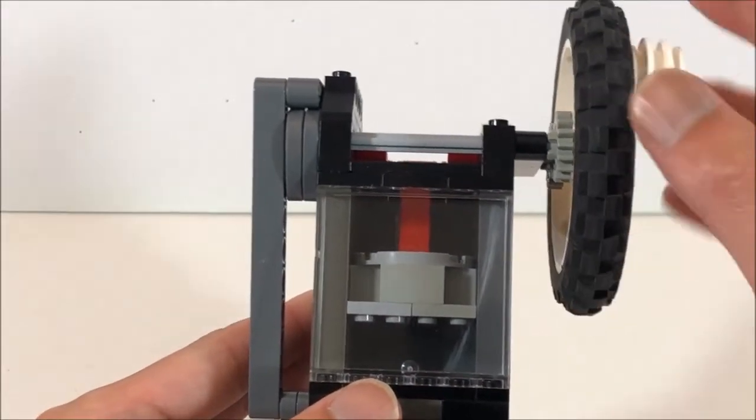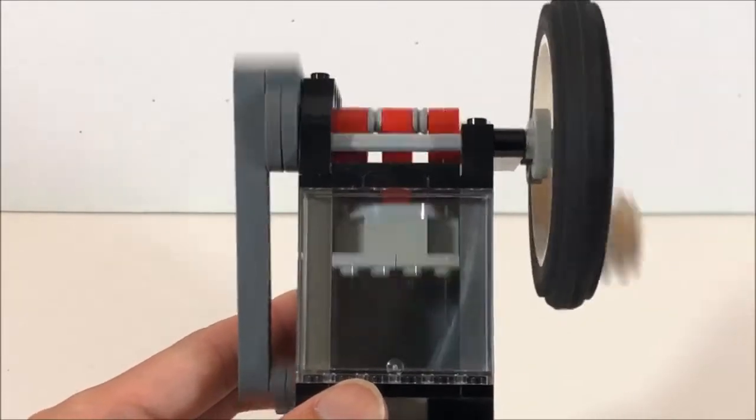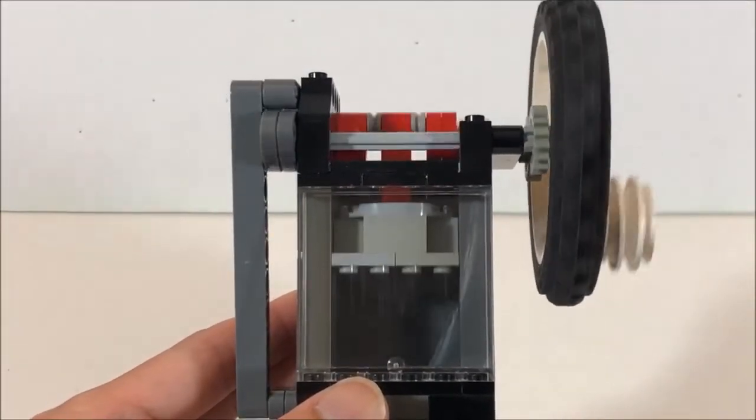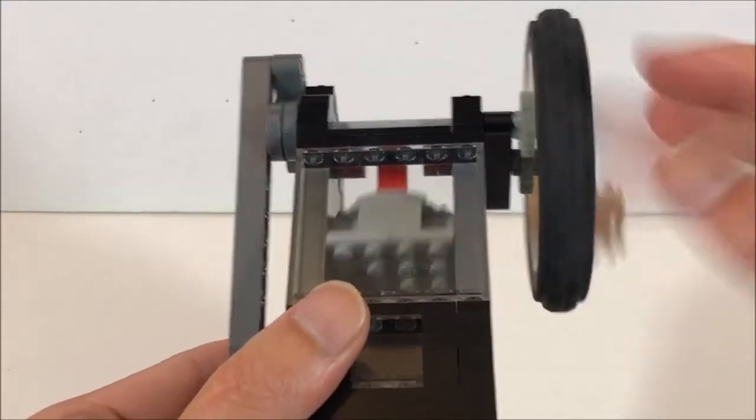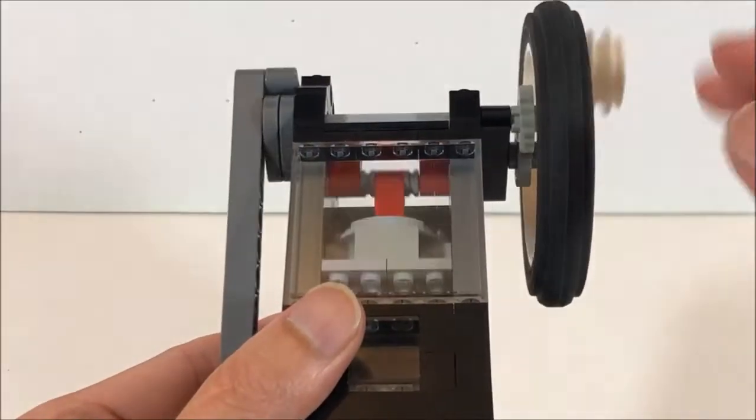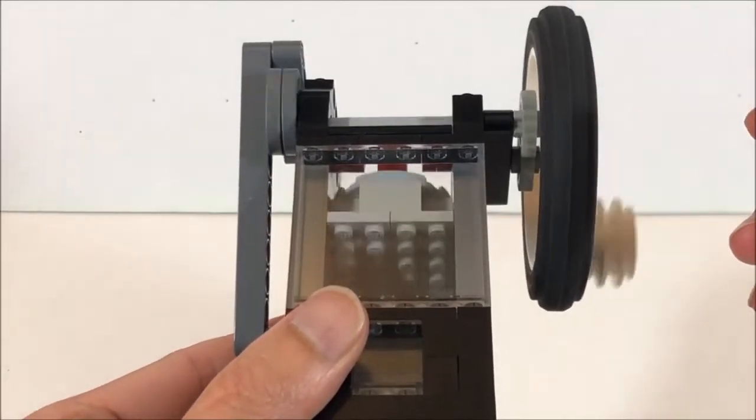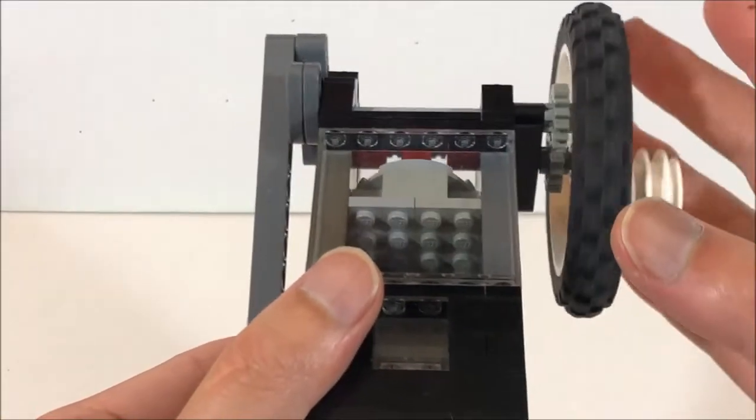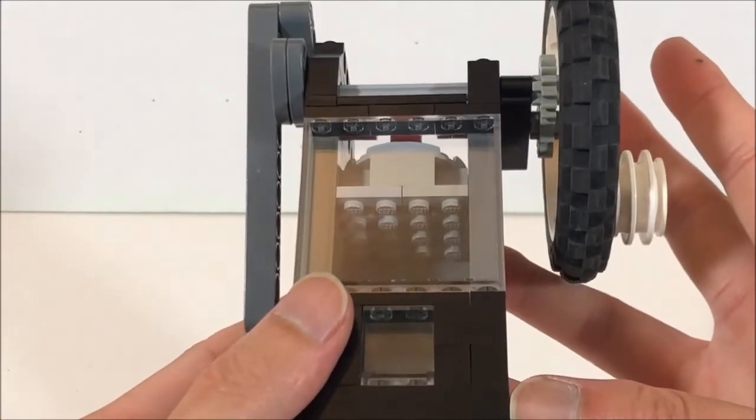A couple more thoughts on the construction. I built the cylinder walls with five high bricks and panels in order to minimize friction on the piston. I also made the head of the piston out of 2x4 Technic plates.